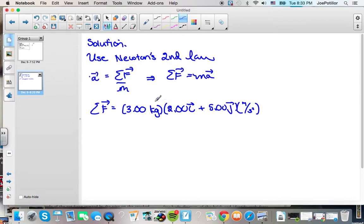And so 3 times 2 is 6, 3 times 5 is 15. We keep three significant figures, obviously, because that's all we're given.